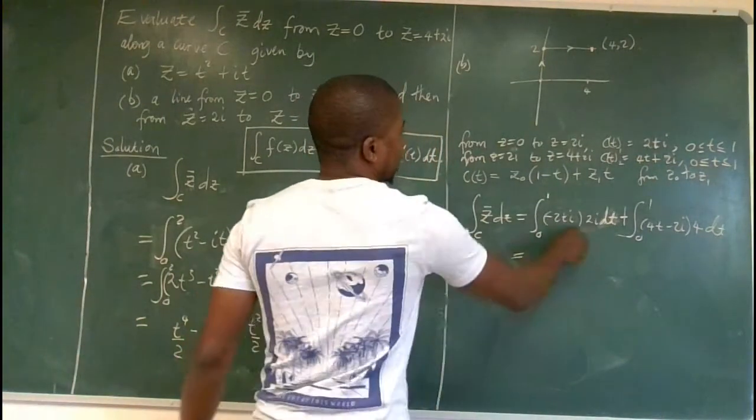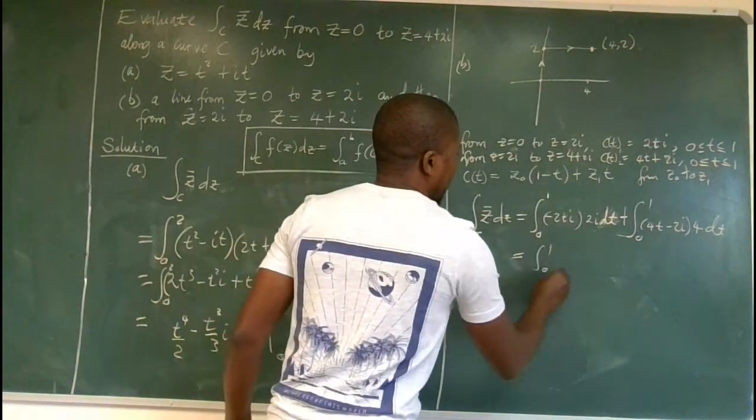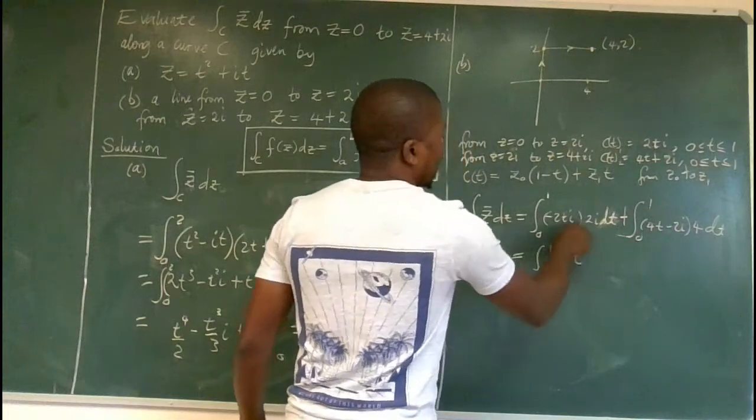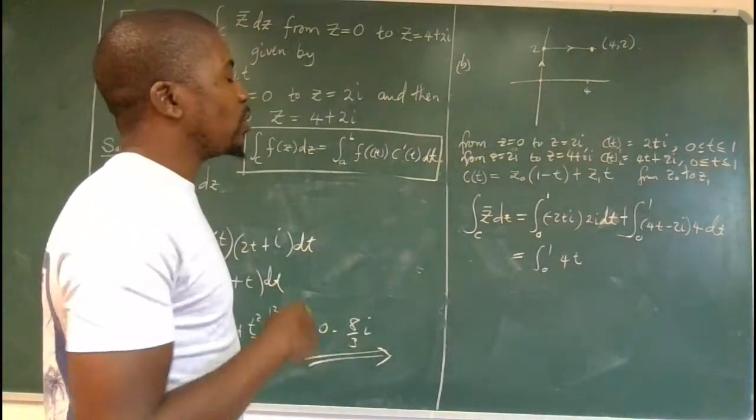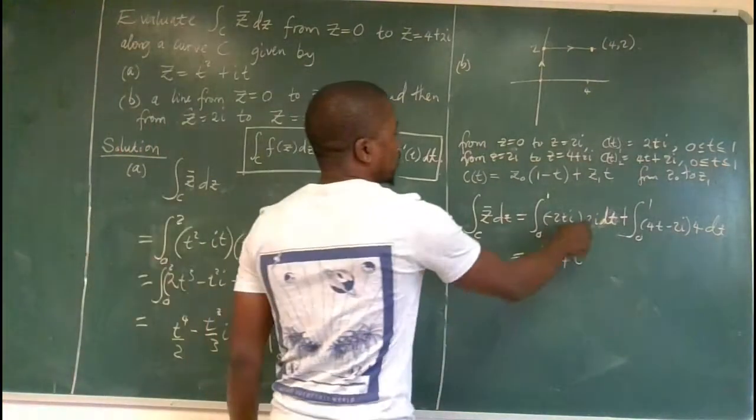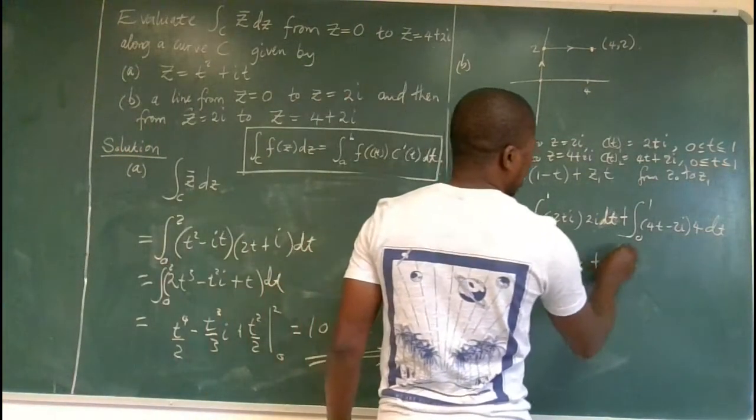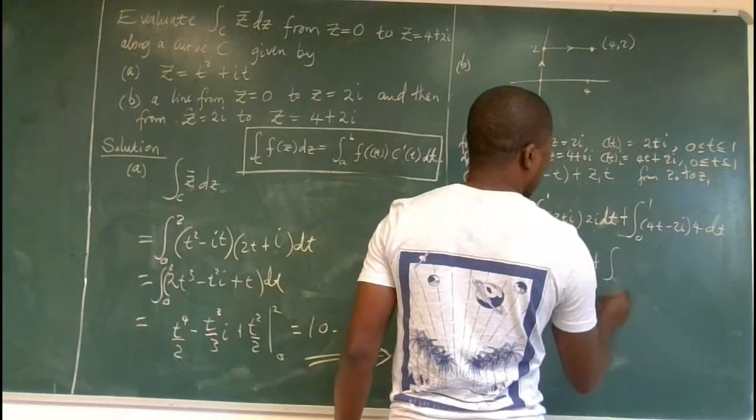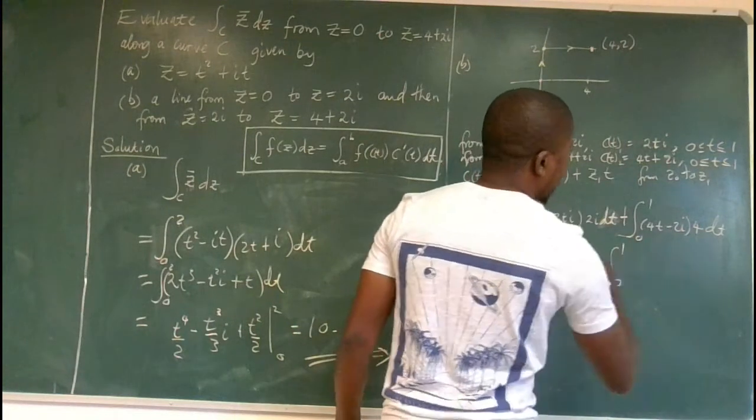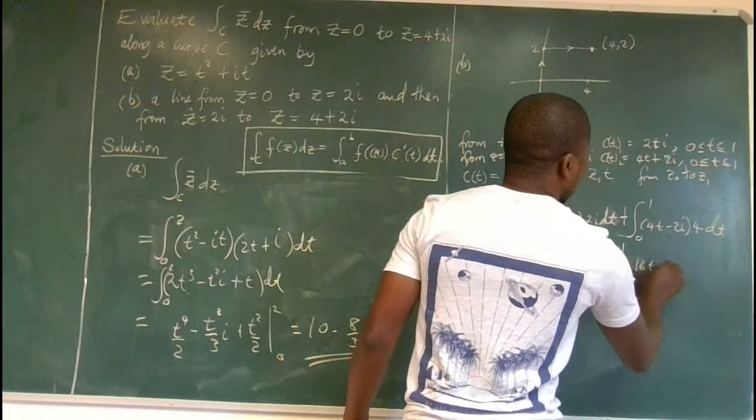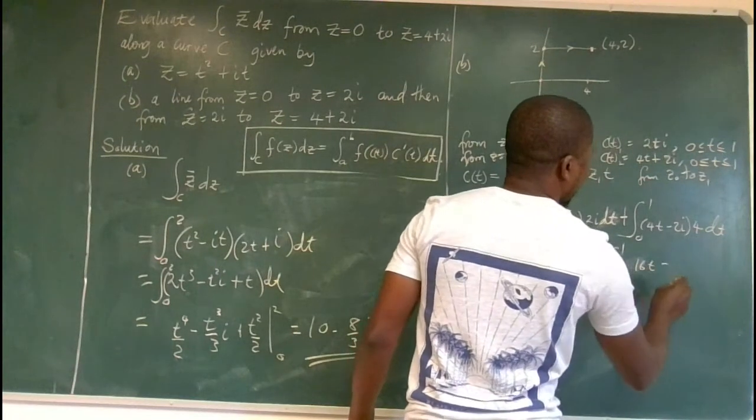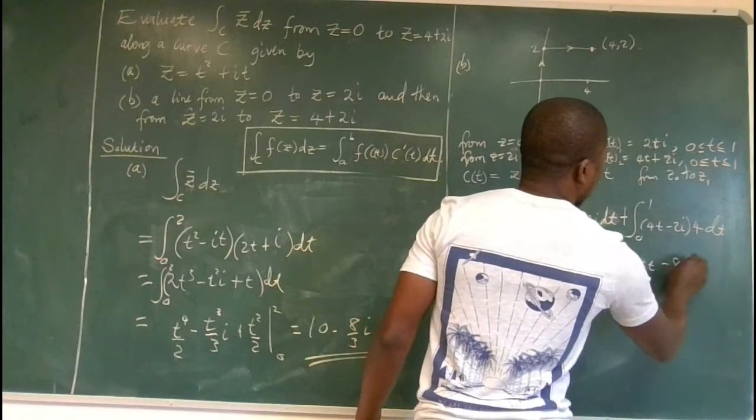So simplifying this, this by that is the integral from 0 to 1 of 4t, because minus times i squared, i squared will be positive 1, 2 by 2 gives 4 plus integral 0 to 1 of, let's remove brackets here. It's 16t minus 8i dt.